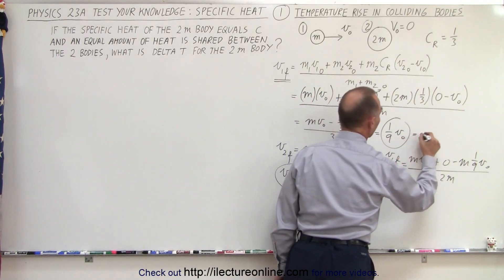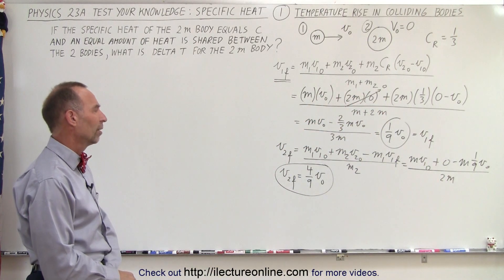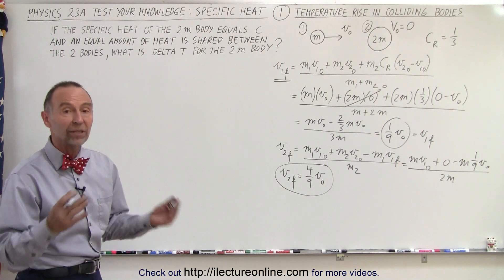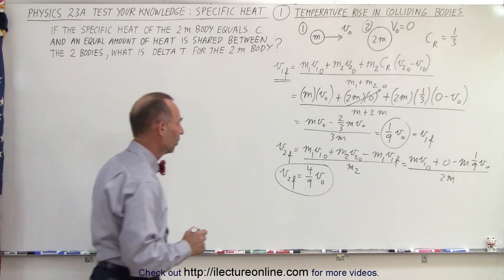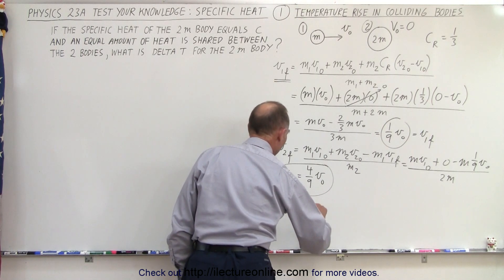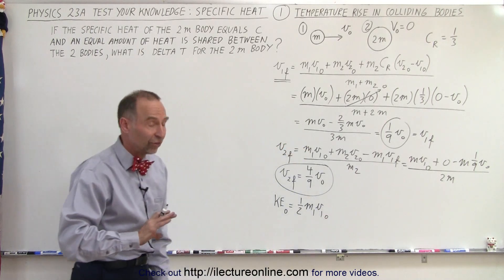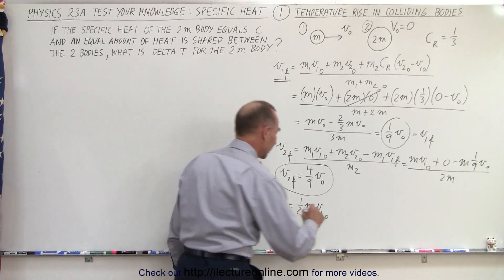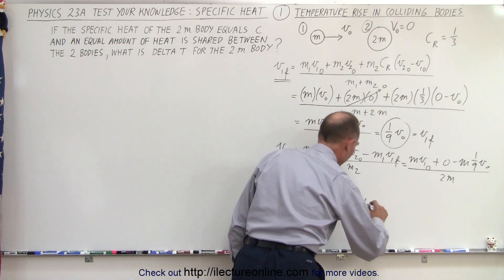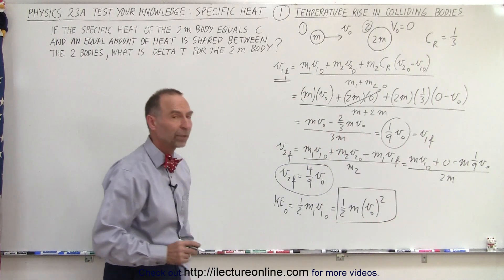So now we have the final velocities of the two masses. From that, we should be able to find the initial and final kinetic energy, so we can assume that the loss in kinetic energy is transferred into heat. Kinetic energy initial is equal to one-half m1·v1-initial squared — because the second object did not have any initial kinetic energy — so it equals one-half times the mass times v-initial quantity squared. That is the initial kinetic energy.